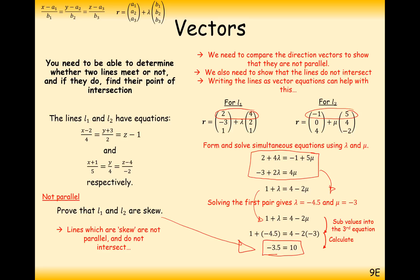We've proven the lines are skew because when the x and y components line up with each other, the z component does not line up. The specific values of lambda and mu give the situation where x and y match up, but when we plug that into the z components, they don't match. So, to answer a skew question: assume intersection, solve for x and y, then prove it doesn't work for z.